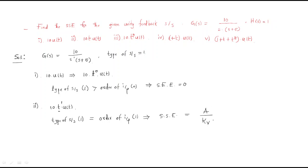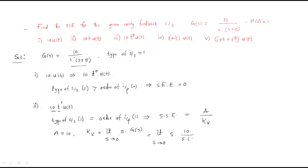The steady-state error formula is ess = a / Kv, where a is the magnitude and Kv is the velocity constant. Here a = 10. Kv = limit as s→0 of s·G(s) = limit s→0 of s · [10 / s(s+5)]. The s terms cancel, and substituting s=0 gives Kv = 10/5 = 2.